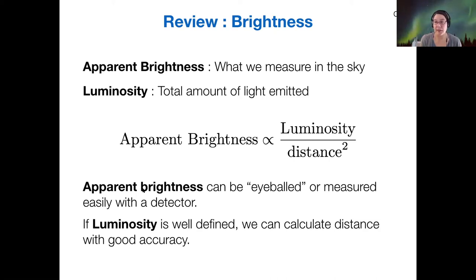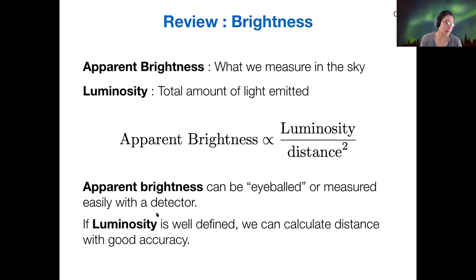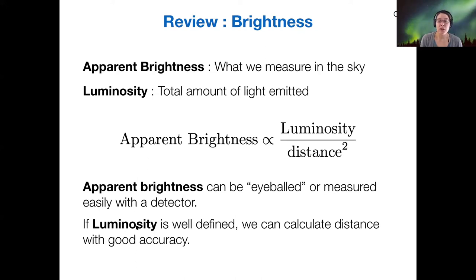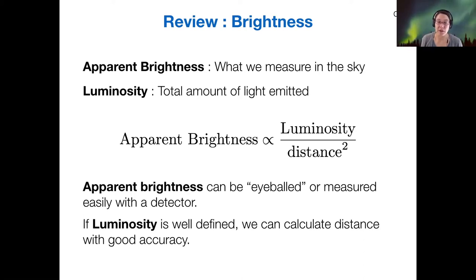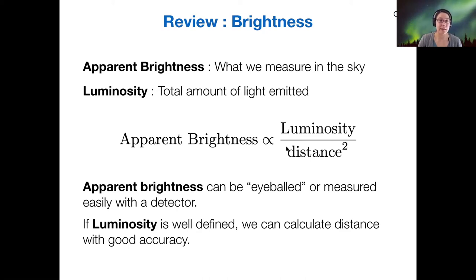The apparent brightness you can eyeball — that's the magnitude scale — but you can also measure it with a detector; your phone is actually a pretty good light detector. And if we know the luminosity of some object, like because we know its period if it's a variable star, then we can calculate that distance. Measure one, you have to know the other one somehow, and then you can calculate distance.